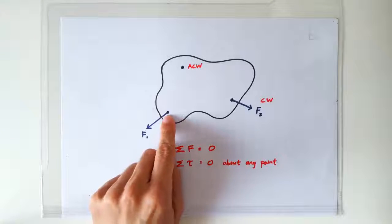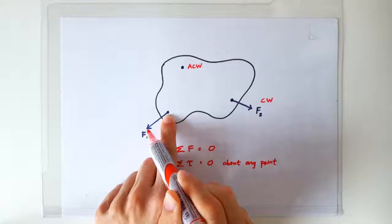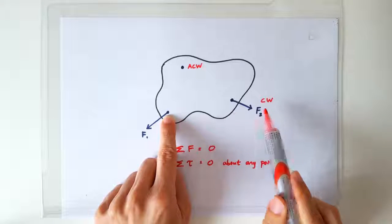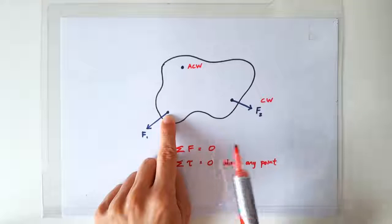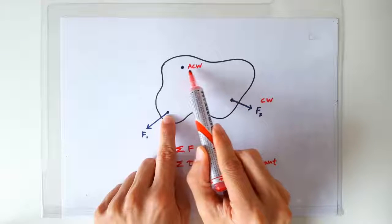If you consider moments about this point, then F1 has no turning effect about this point. F2 is going to produce a clockwise moment, so all we can say is that F3 is going to produce an anticlockwise moment.